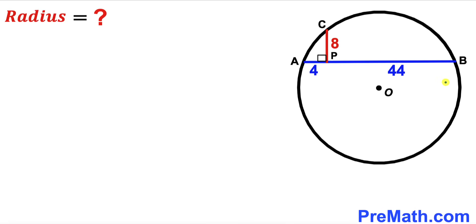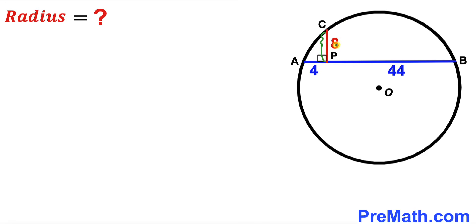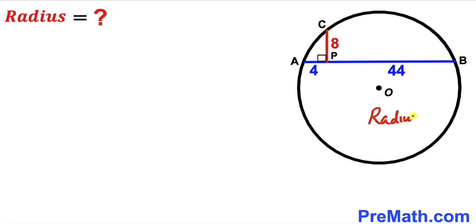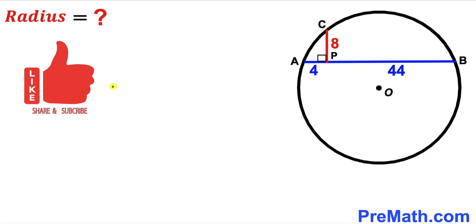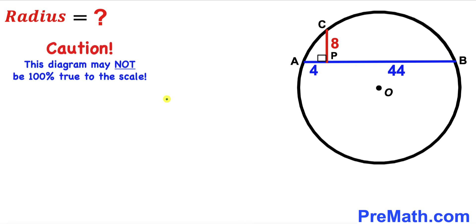Welcome to Pre-Math. In this video we have a circle with center O, along with chord AB, such that CP is perpendicular to chord AB. The segment CP has length 8 units, segment AP has length 4 units, and segment BP has length 44 units. Our task is to calculate the radius of this circle. Please give a thumbs up and subscribe.